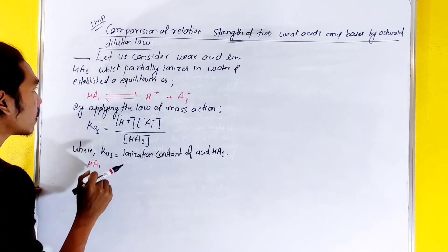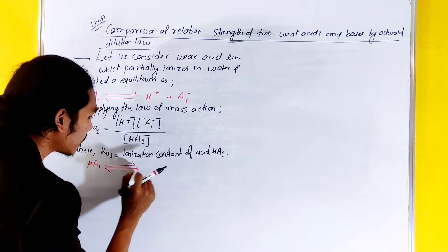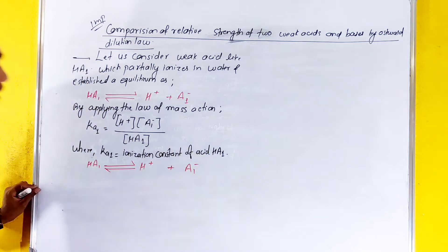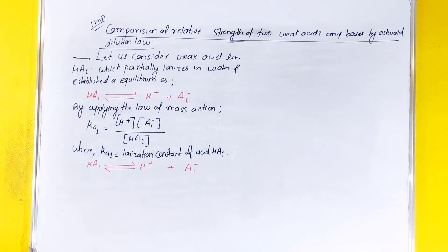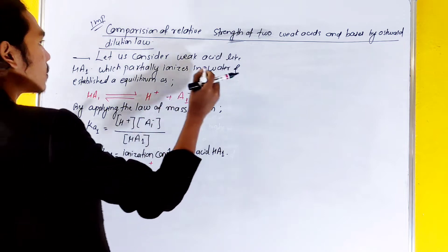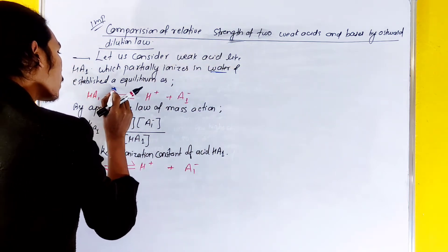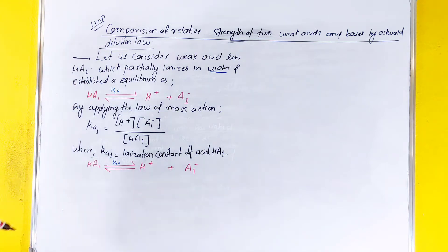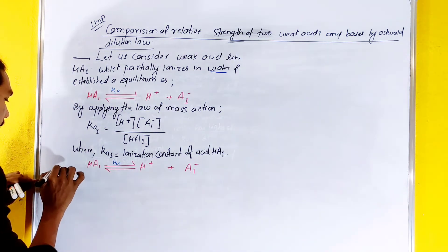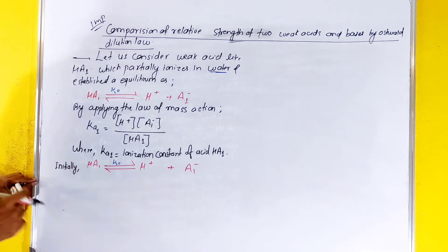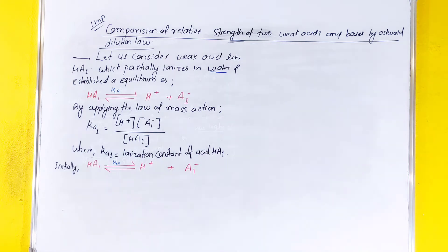Looking at the reaction of HA1: HA1 ionizes to give H⁺ plus A1⁻. We can set up the initial condition and equilibrium condition. At time zero, the concentration of HA1 is C1 mole per liter.